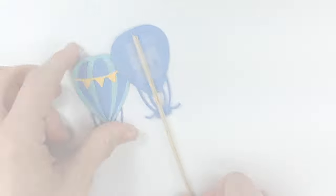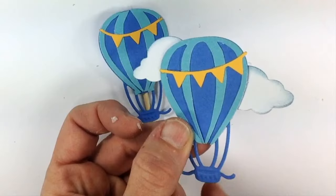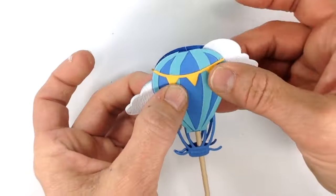And before I glue the second balloon shape, I added some clouds to it. I lightly inked the edges of the clouds to make them pop just a bit. At this point my balloon is done and can be glued together.